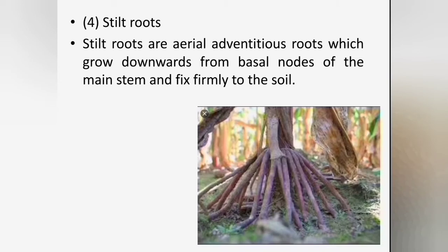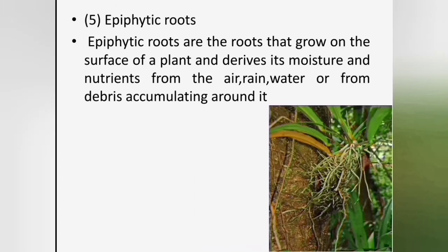Stilt roots are aerial adventitious roots which grow downwards from basal nodes of the main stem and fix firmly to the soil. These roots bear several large overlapping root caps, called multiple root caps. Examples include sugarcane, Pandanus, Rhizophora, sorghum and maize. Epiphytic roots grow on the surface of other plants and derive their moisture and nutrients from the air, rain, water or from debris accumulated around them. The best known epiphytic plant roots include mosses and orchids.